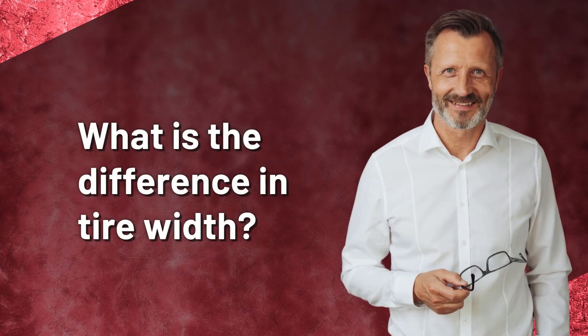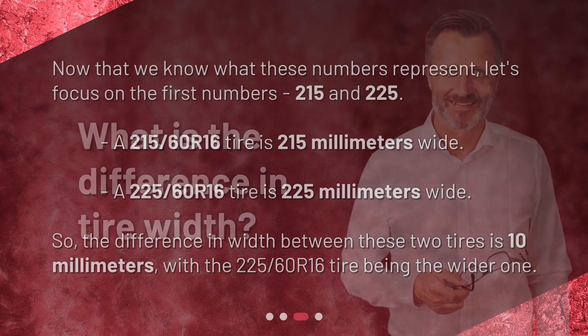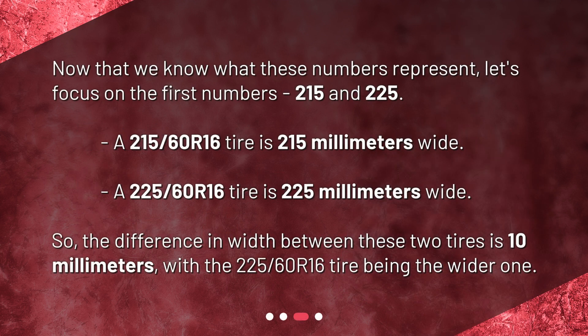What is the difference in tire width? Now that we know what these numbers represent, let's focus on the first numbers: 215 and 225. A 215/60R16 tire is 215 millimeters wide, and a 225/60R16 tire is 225 millimeters wide. So the difference in width between these two tires is 10 millimeters, with the 225/60R16 being the wider one.